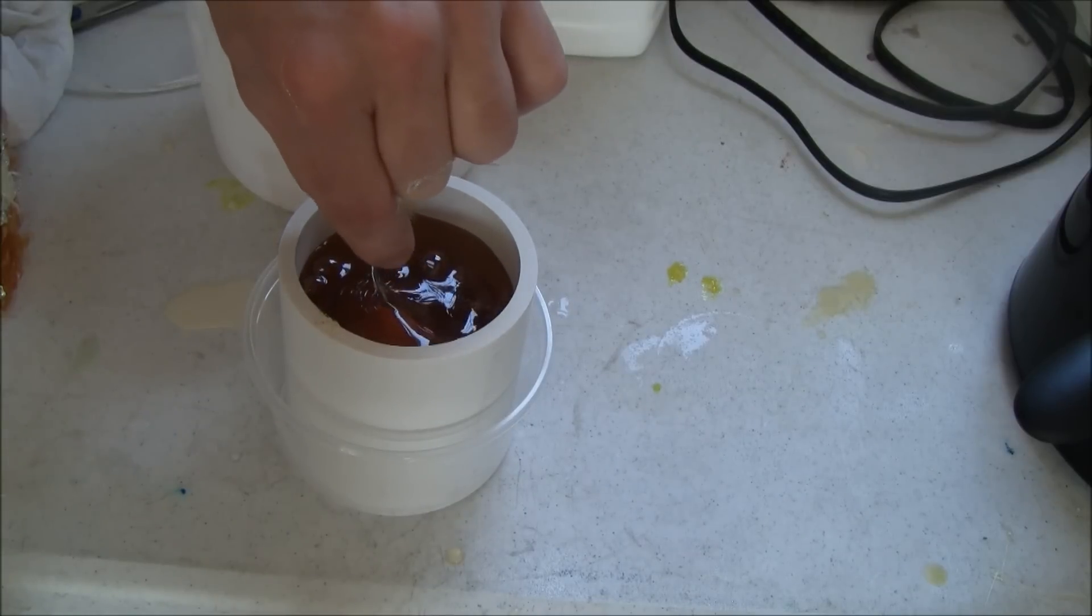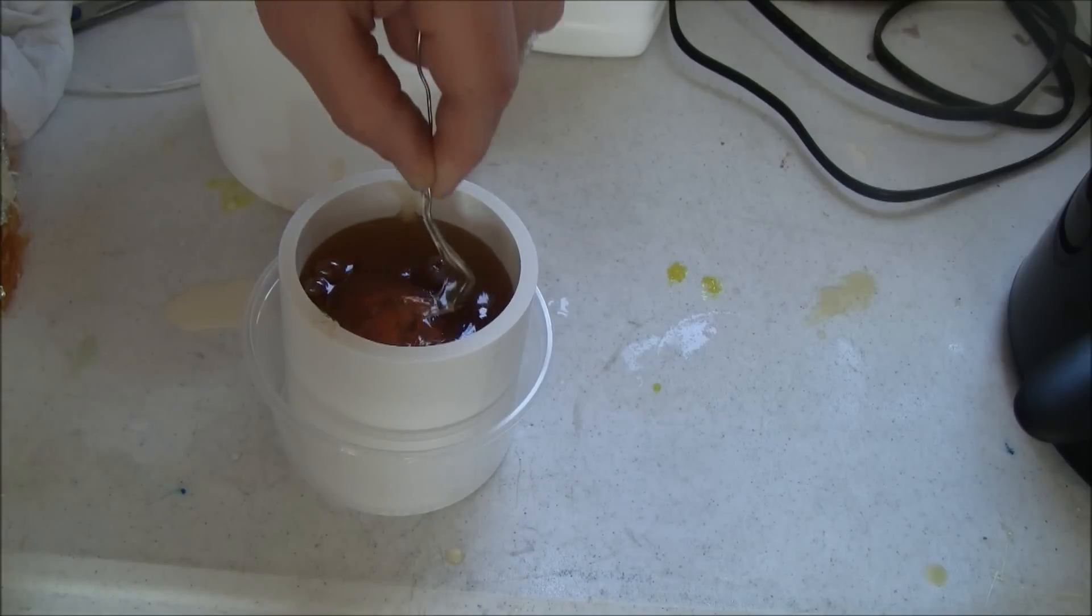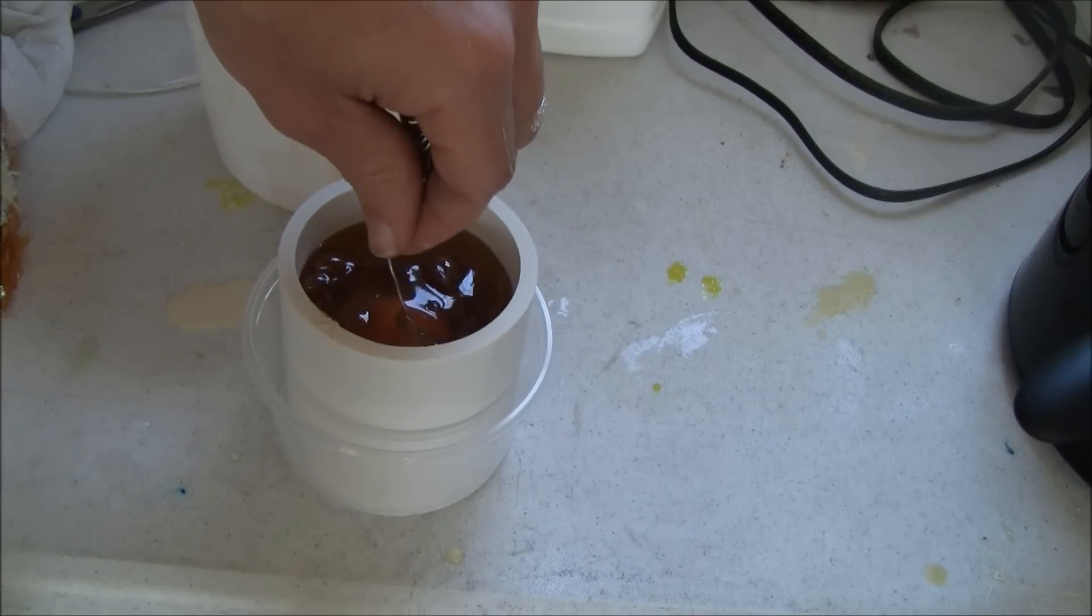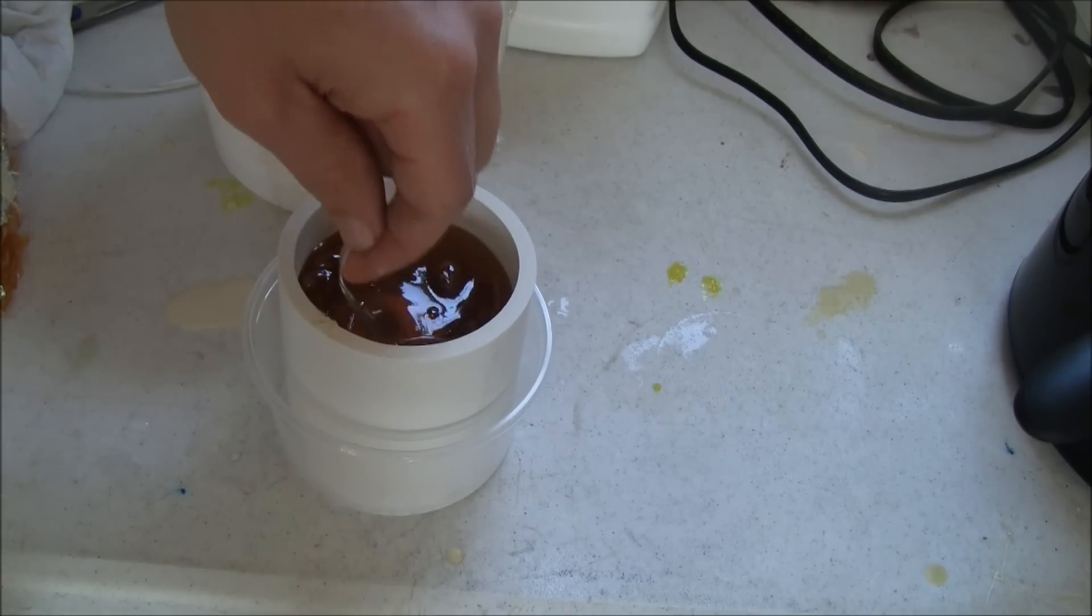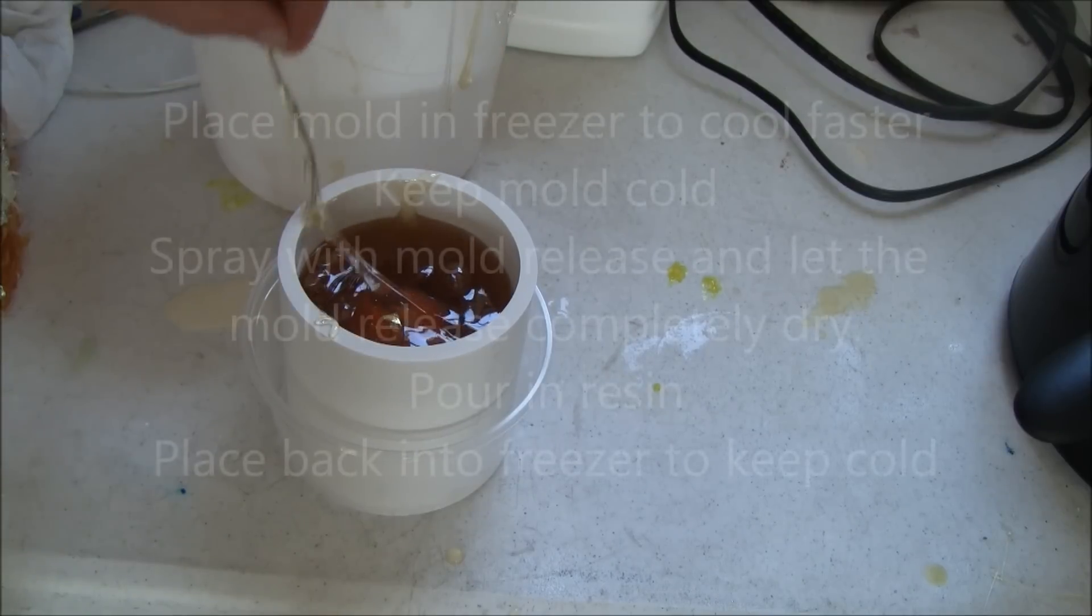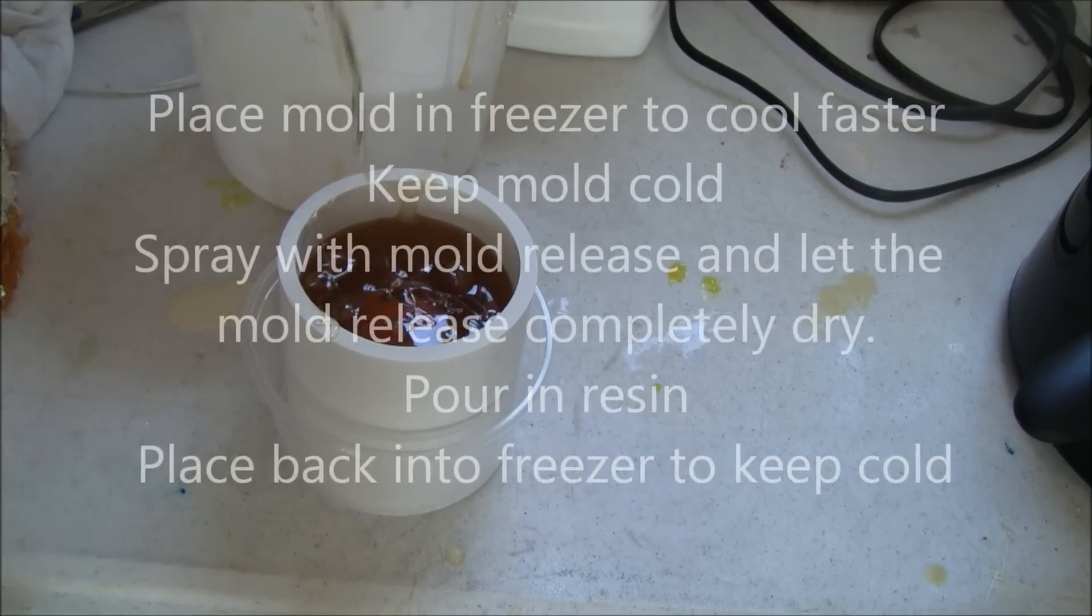We don't show it in this video, but the ComposiMold is cooled rapidly by placing it in the freezer. It took approximately 30 minutes to cool, but to ensure it was very cold before pouring in the urethane resin, we left the mold in the freezer for approximately 2 hours.